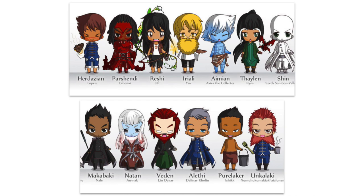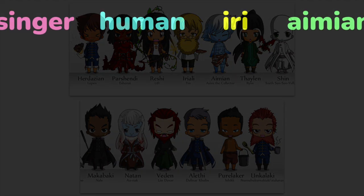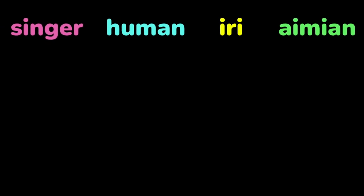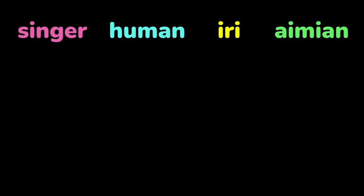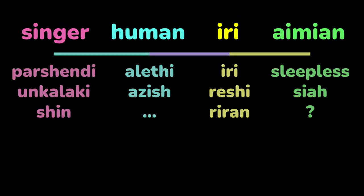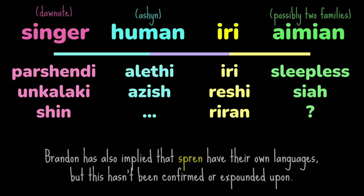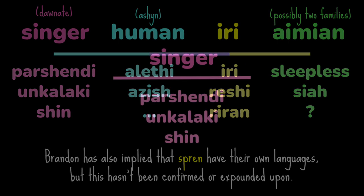So what does this tell us about the linguistics of Roshar? From this history, confirmed by Brandon Sanderson, we can derive the four major language families of Roshar and their constituents. The first language family — the only one native to the continent — is Dawnate, or Singer.